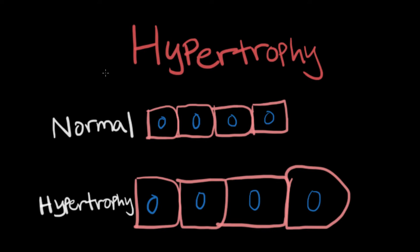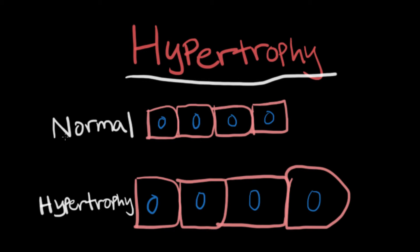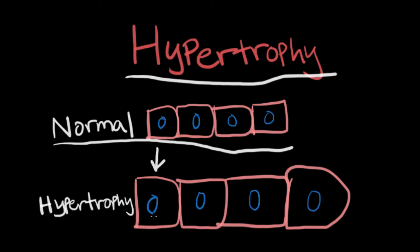One of the ways a cell can adapt is known as hypertrophy. Hypertrophy is an increase in cell size. The size of a single individual cell will increase, which also increases the amount of functional tissue because cells form the tissues. In the first row of cells we have the normal set of cells with the nucleus shown in blue. If they undergo hypertrophy, each individual cell will become enlarged and the number of cells will stay the same, but we will now have bigger cells.